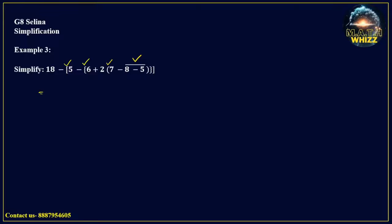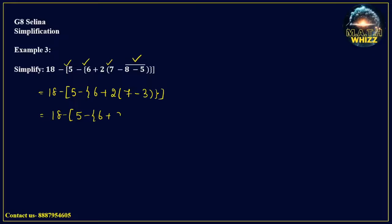So first: 18 minus of 5 minus of 6 plus 2, into 7 minus 8 — 8 minus 5 is 3. Now close all the brackets. So 18 minus of 5 minus of 6 plus 2, into 7 minus 3, which is 4.